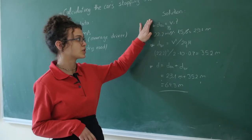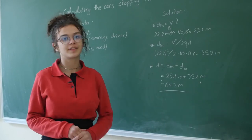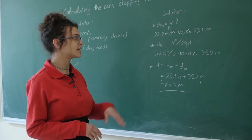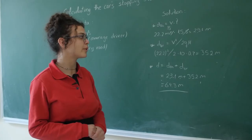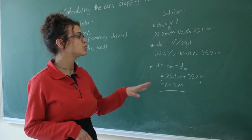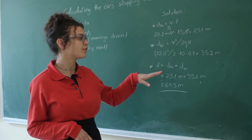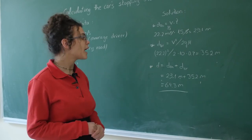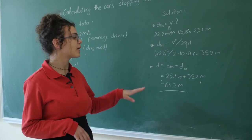Here is the solution. Firstly, we find the thinking distance, which is velocity multiplied by time. Then, we find the braking distance, which is velocity squared divided by 2g and the frictional coefficient, that is mu. And then, we find the stopping distance, which is the sum of the thinking distance and braking distance.